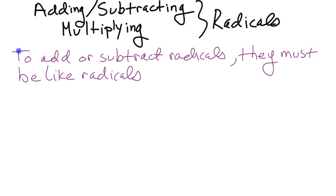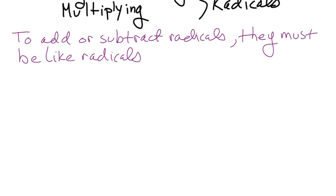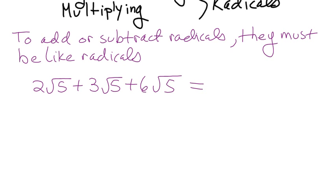So like radicals are things like — let's do an easy one. 2 root 5 plus 3 root 5 plus 6 root 5. That equals 11 root 5. It's handy to think of it just as in algebra: 2x plus 3x plus 6x gives 11x. So 2 root 5s plus 3 root 5s plus 6 root 5s gives 11 root 5s. Those are like radicals — they're all root 5.